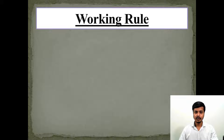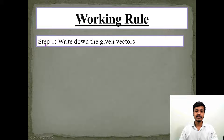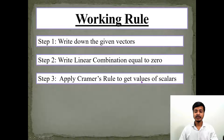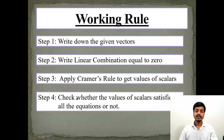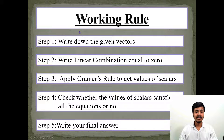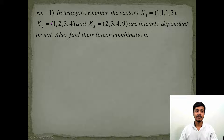Now let's look at the working rule. Step 1: write down the given vectors. Step 2: write down the linear combination and equate it to zero. Step 3: apply Cramer's rule to get the values of the scalars. Step 4: check whether the values of the scalars satisfy the given equations. Step 5: write down your final answer. These steps are useful in an exam when you don't have time to revise everything.